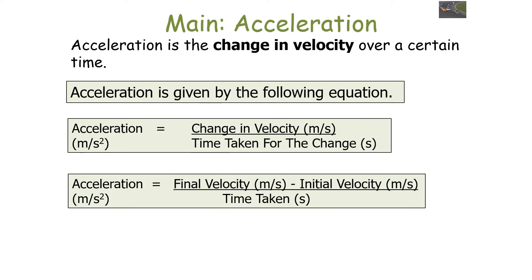We can calculate acceleration with the following equation. Acceleration in meters per second squared is equal to the change in velocity in meters per second divided by the time taken for the change in seconds. We can also write this equation in a different format: acceleration equals final velocity in meters per second minus the initial velocity in meters per second, all over the time taken in seconds.